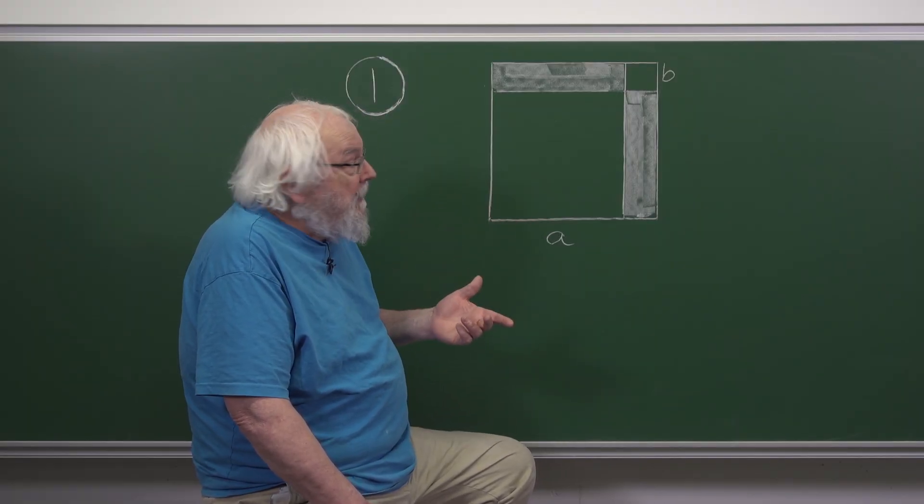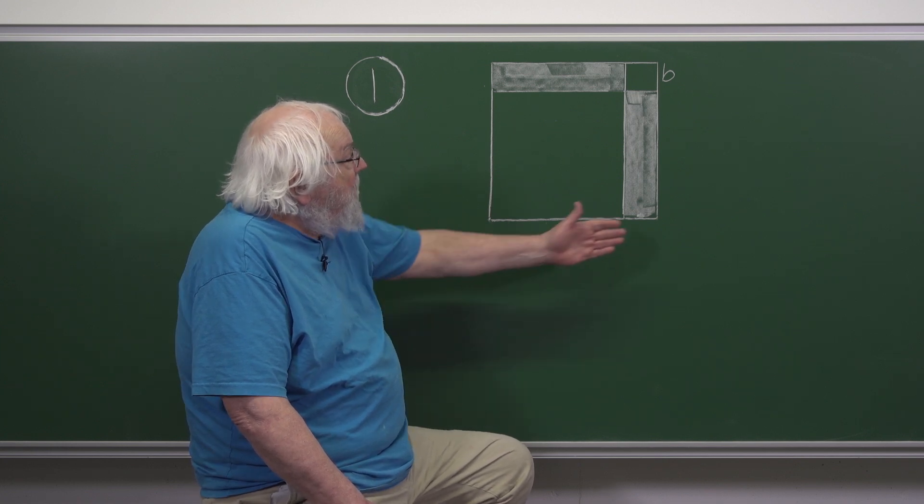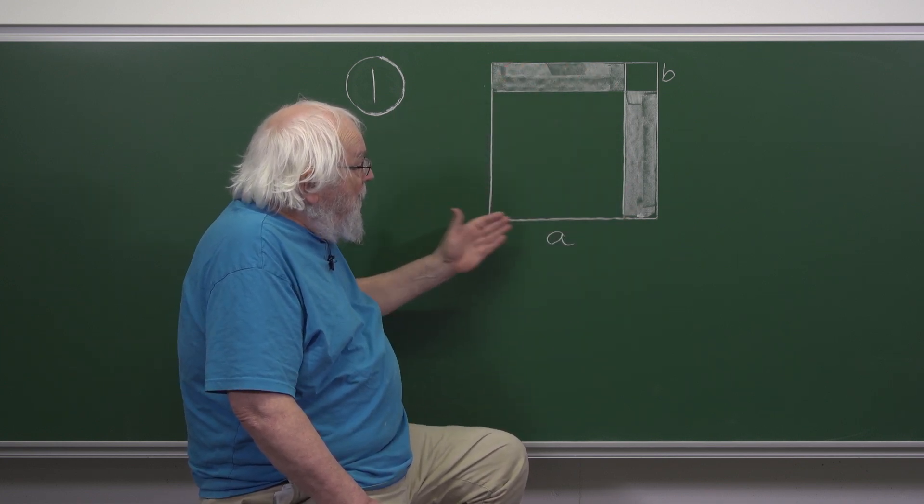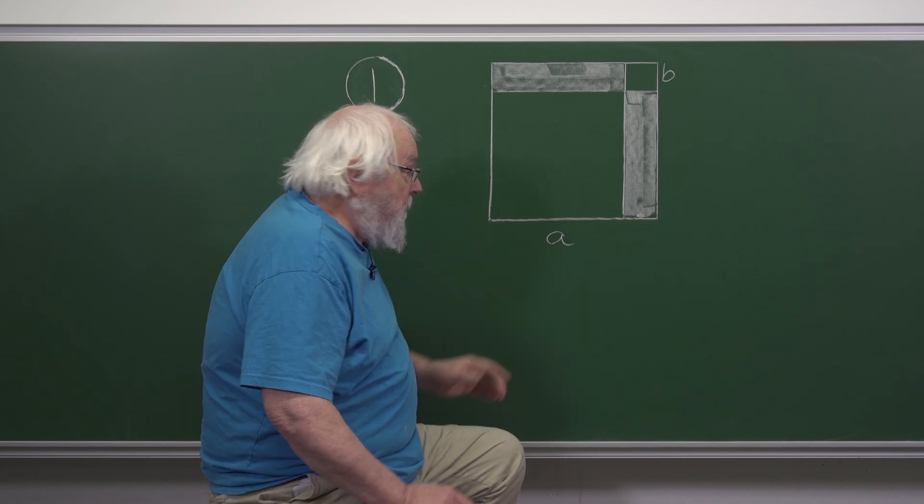Let's compute it algebraically. The area of the whole square will be A plus B all squared.